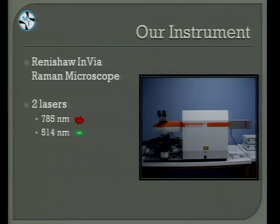A little about our instrument: it's a Renishaw InVia Raman microscope with two different lasers. We have a 785 nm near-IR red laser used for most of our analyses, and also a 514 nm green laser. The reason we have two lasers is to hopefully eliminate possible fluorescence. About 80% to 90% of the pigments we've run have been identified by the 785 laser, and about half of those can be identified with the 514 laser. A nice advantage is we have a dry 100× objective, allowing us to look at very small particles and pigments relatively easily.